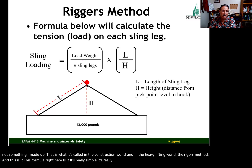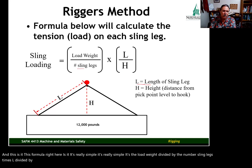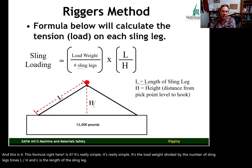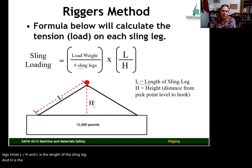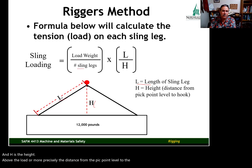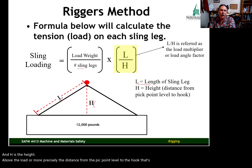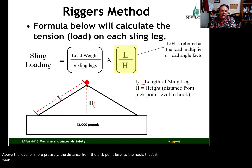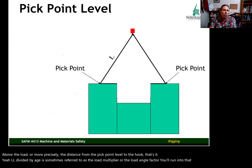The rigger's method formula is really simple: it's the load weight divided by the number of sling legs, times L divided by H. L is the length of the sling leg and H is the height above the load — more precisely, the distance from the pickpoint level to the hook. L divided by H is sometimes referred to as the load multiplier or the load angle factor.